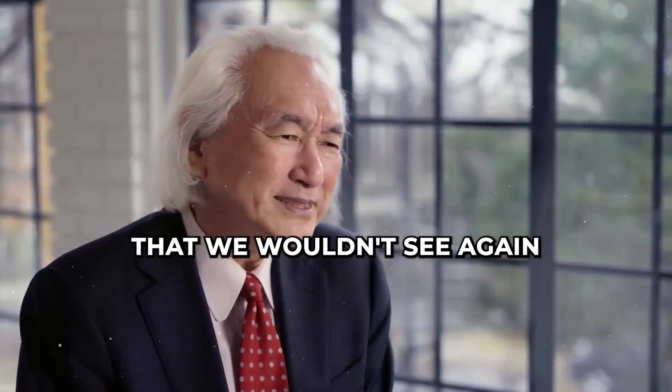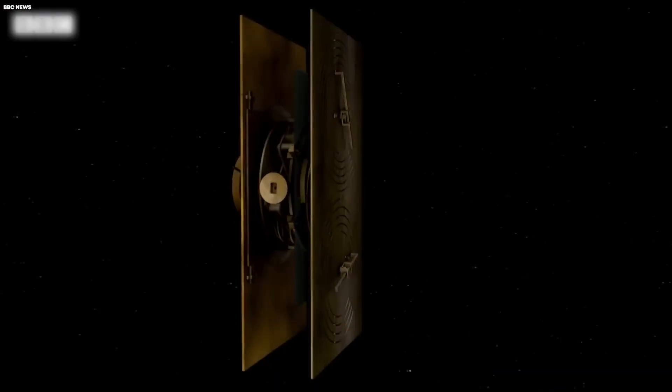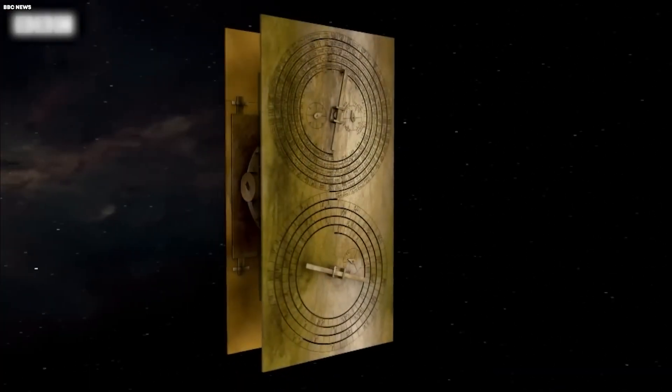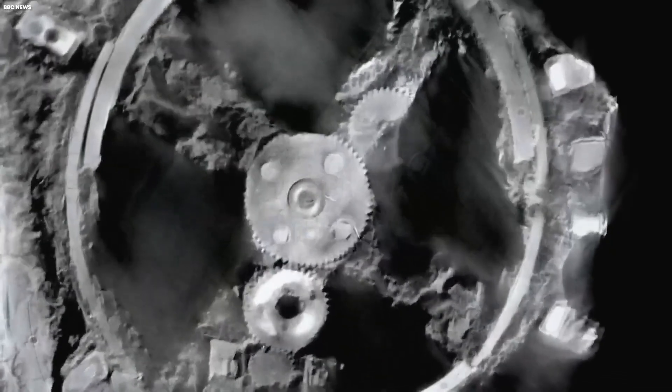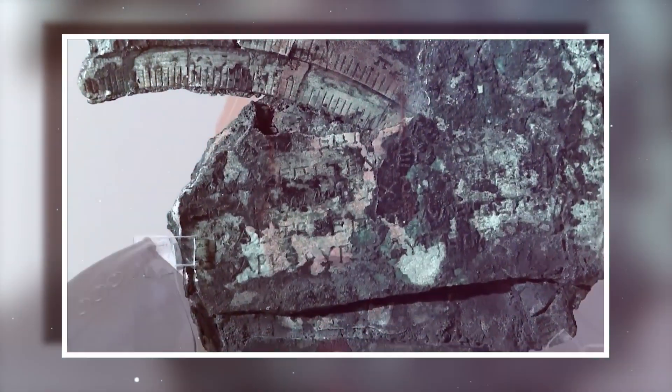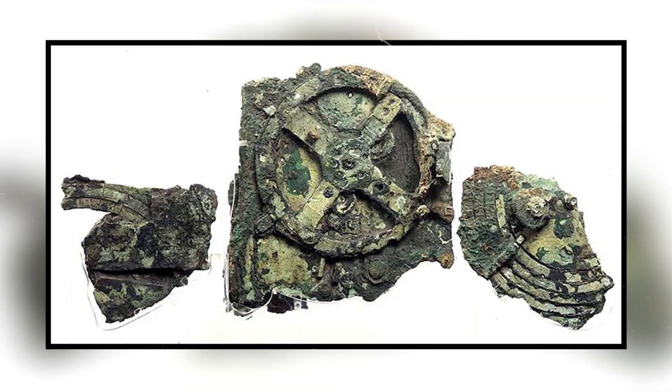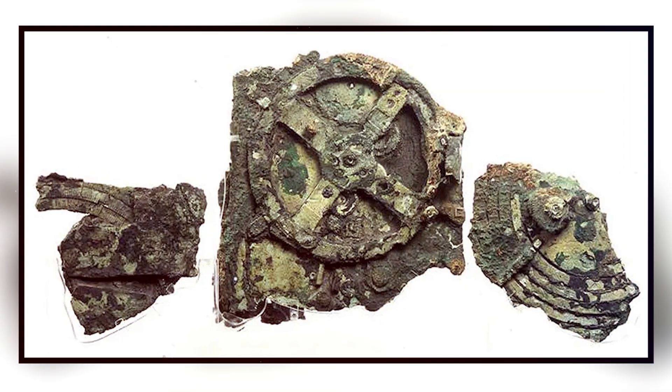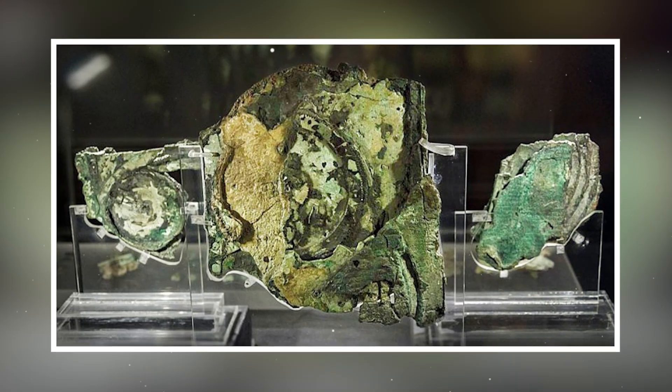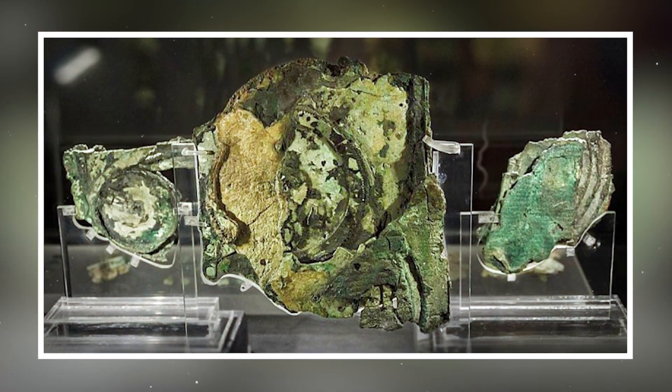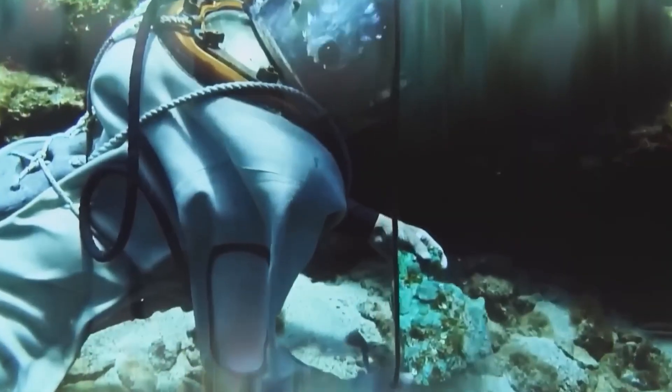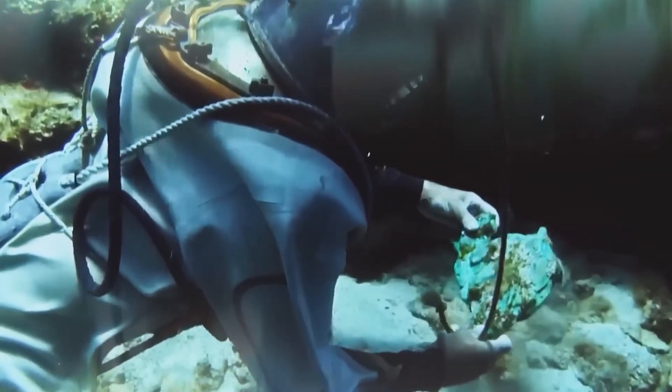This was a device we wouldn't see again. For over 2,000 years, something extraordinary lay silent beneath the Aegean Sea—a relic so far ahead of its time it shouldn't have existed. Half a machine, half a mystery. The Antikythera mechanism. Its gears whispered of eclipses and calendars, but its true purpose was lost, swallowed by the ocean, erased by centuries.